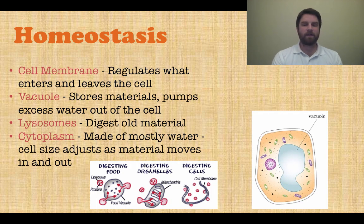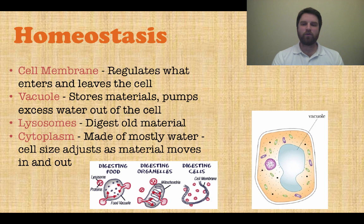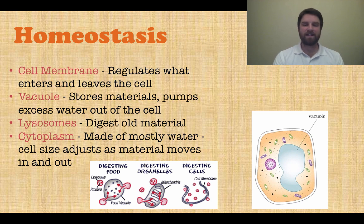Cytoplasm is made mostly of water and adjusts as material moves in and out of the cell, so it helps with both support and homeostasis. Other organelles involved in homeostasis include the cell membrane, which regulates what enters and leaves the cell. Next we have the vacuole — it looks like a big pool within the cell — and it's responsible for pumping excess water out of the cell and also stores some materials. Finally, lysosomes — which sounds like Lysol, an antibacterial cleaner — digest old material and get rid of it, acting as a cleaner for the cell to help maintain homeostasis.